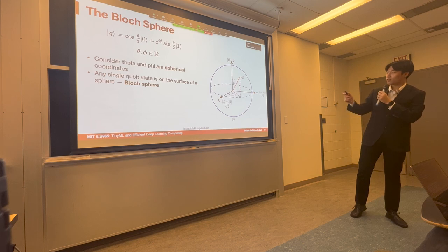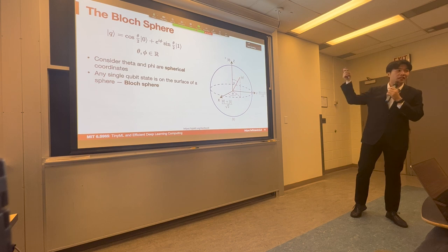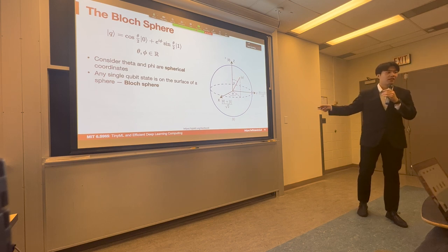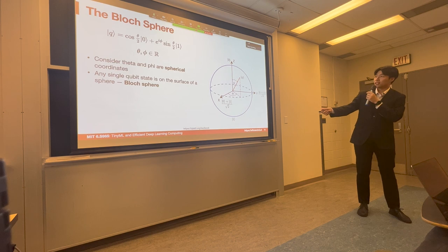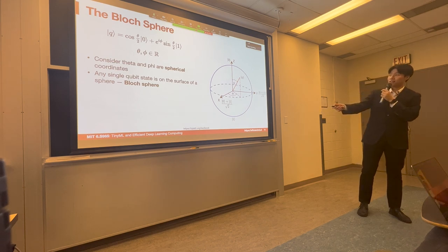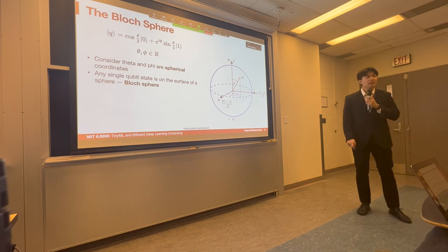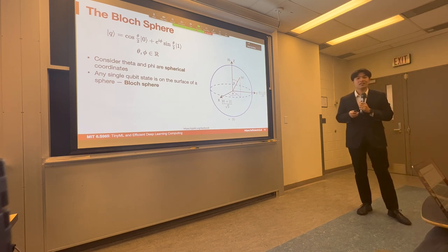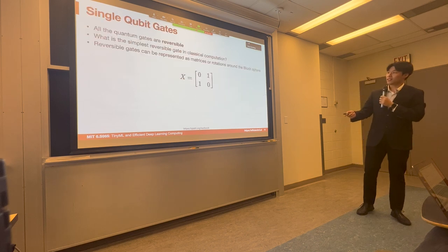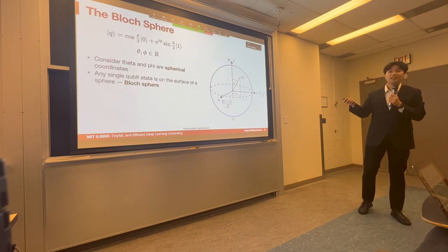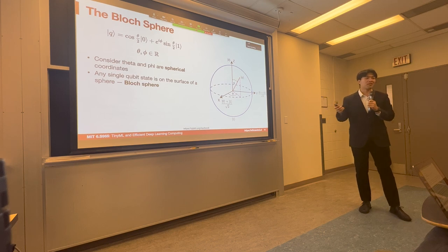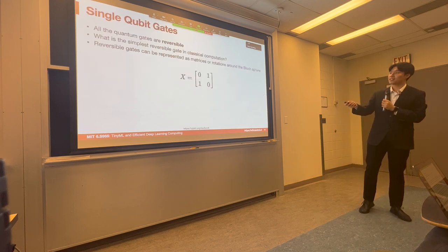The basis states zero and one are the two poles of the Bloch sphere. If theta is pi and phi is zero, we get the one state. The intuition of the Bloch sphere is clear for a single qubit, but it is not as intuitive when we come to multiple qubits, because it is very difficult to have a sphere representation for multiple qubits.